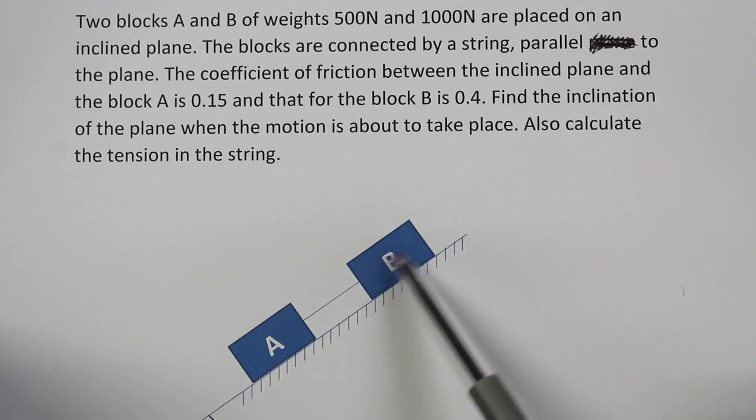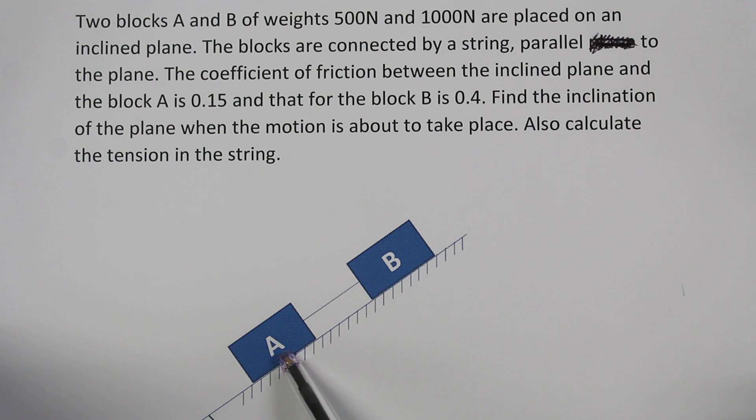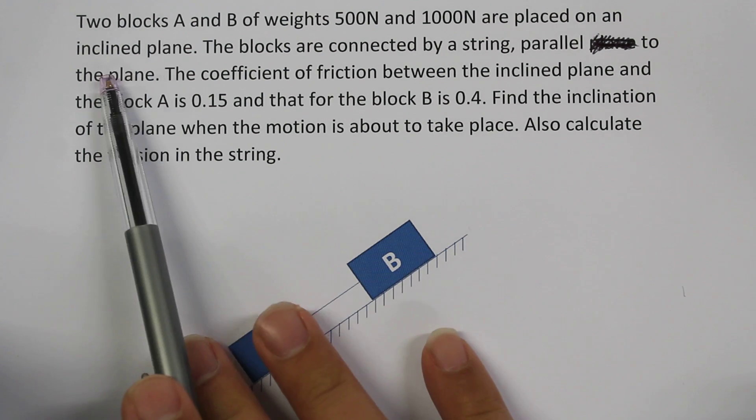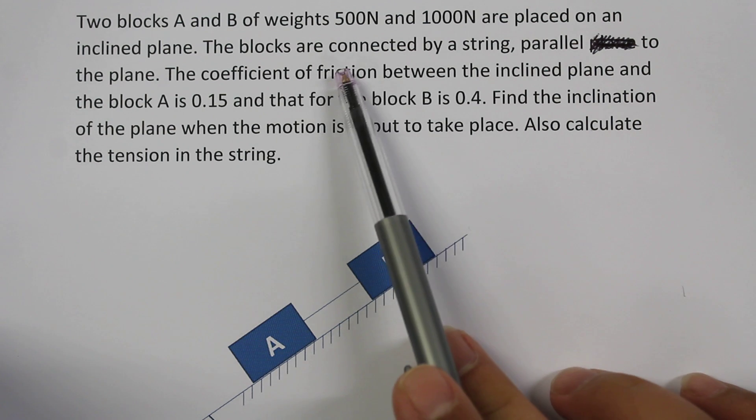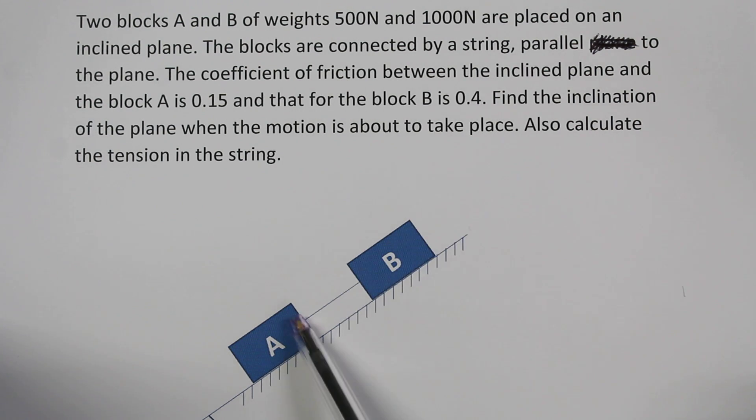Two blocks A and B of weights 500 Newtons and 1000 Newtons respectively are placed on an inclined plane. The blocks are connected by a string parallel to the plane.